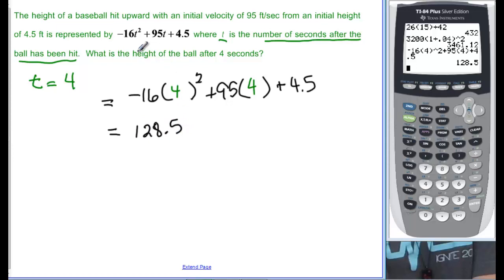Okay, again, what did we find? What is the height? That's what they're asking us for. And height is in feet. The velocity was feet per second, and the initial height was 4.5 feet. So, we can easily say that it is 128.5 feet after four seconds, or at four seconds, actually, would be a better word. At four seconds, it's 128.5 feet in the air.